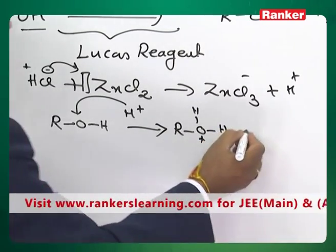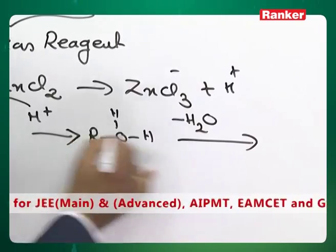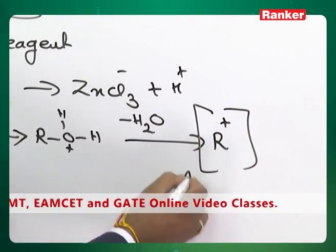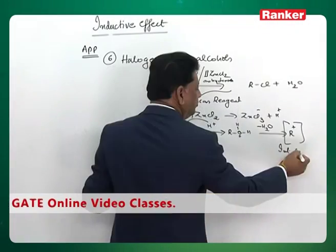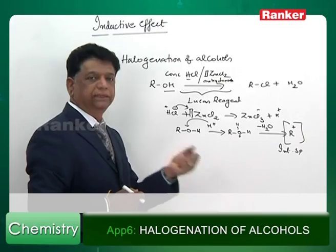The protonated alcohol undergoes loss of water, minus H2O. So this R will become R plus. This is your intermediate species. In the alcohol to alkyl halide conversion, the intermediate species is R plus.